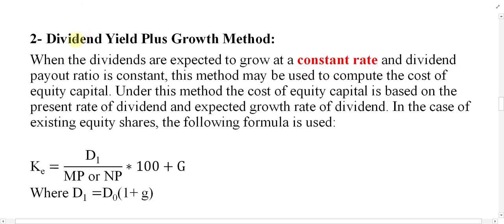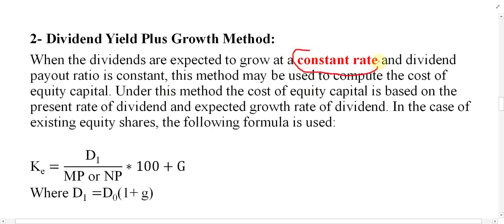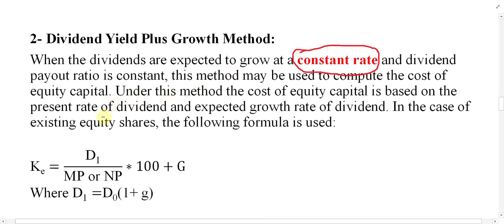Bismillahirrahmanirrahim. The second method for calculation of cost of equity is the Dividend Yield Plus Growth method. The difference between this method and the previous method is that in the previous method we assume there is no growth in the dividend, but in this method we assume there is a growth, and that growth is constant. We will not receive only the current rate of return but also there will be a growth in the dividends. The growth is constant — for example, 5% forever or 10% forever — and that growth rate remains for the whole life of the equity shares.